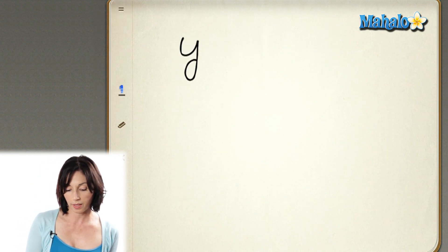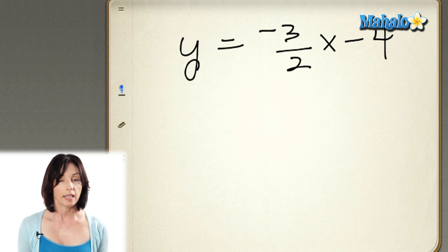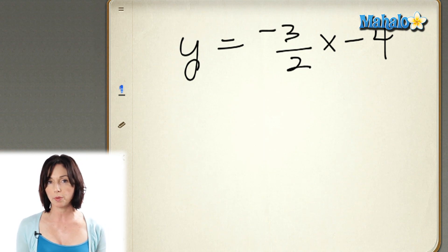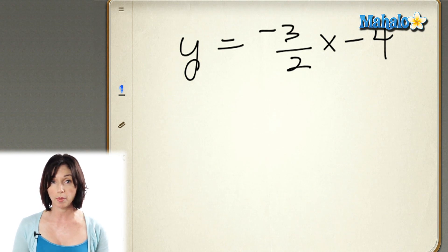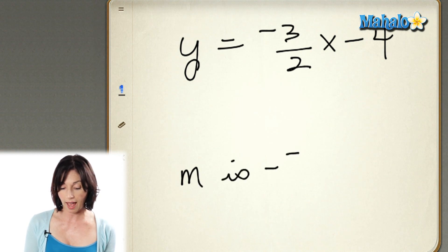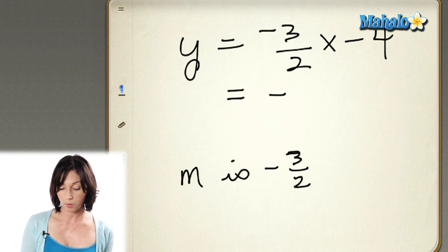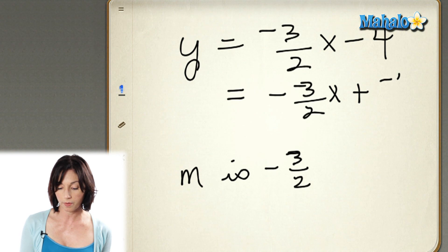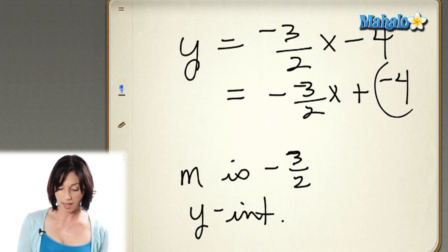Suppose we have y equals negative 3 halves x minus 4. It's the exact same thing. Even though we have negative values here, we don't need to worry about that. The slope is the value that's multiplying the independent variable x, so in this case the slope, m, is negative 3 halves. If you're a little confused about what the y-intercept is, don't forget we could rewrite this equation as y equals negative 3 halves x plus a negative 4. That means our y-intercept, the b in the standard form of the equation, is negative 4.